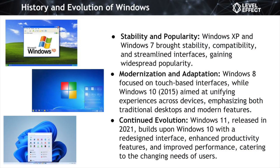Then we saw iterations like Windows XP and Windows 7, where Microsoft really started to prioritize stability and compatibility. These versions were characterized by smoother performance, improved hardware support, and streamlined interfaces. This focus on stability contributed to the widespread adoption and popularity among users across the globe.